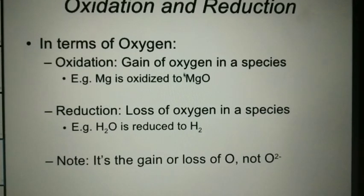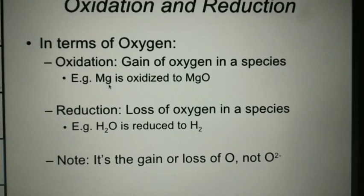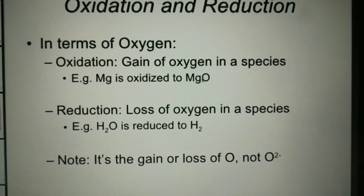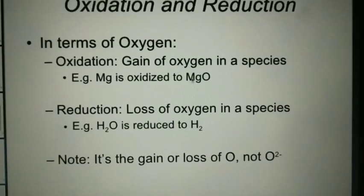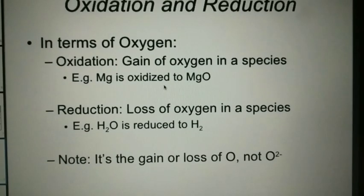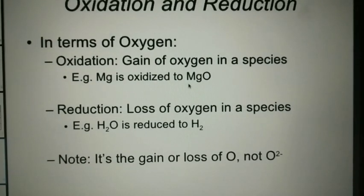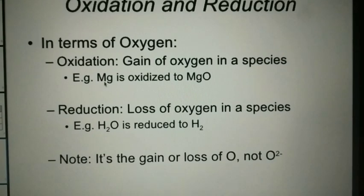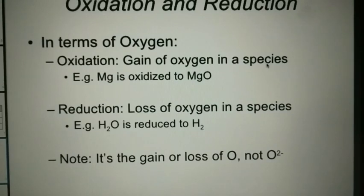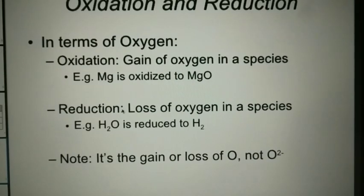In these compounds, you can see that magnesium first is not carrying anything. But after oxidation it is carrying oxygen — O is added. So addition of oxygen takes place, and it is gaining one oxygen atom. So magnesium is oxidized to MgO. In terms of oxygen, it is clear that gaining of oxygen in any species is oxidation. Now, reduction means loss of oxygen in a species.